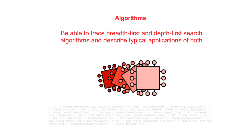In the previous set of videos, we described, from an abstract point of view, the properties of some of the more complex data structures which were in use in computer systems and available in many modern programming languages. If you haven't already, it's important you go back and watch those videos first.